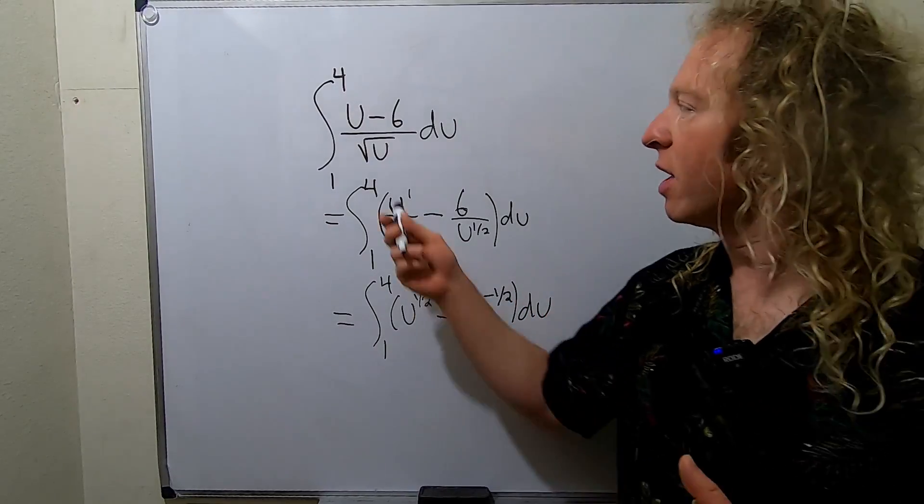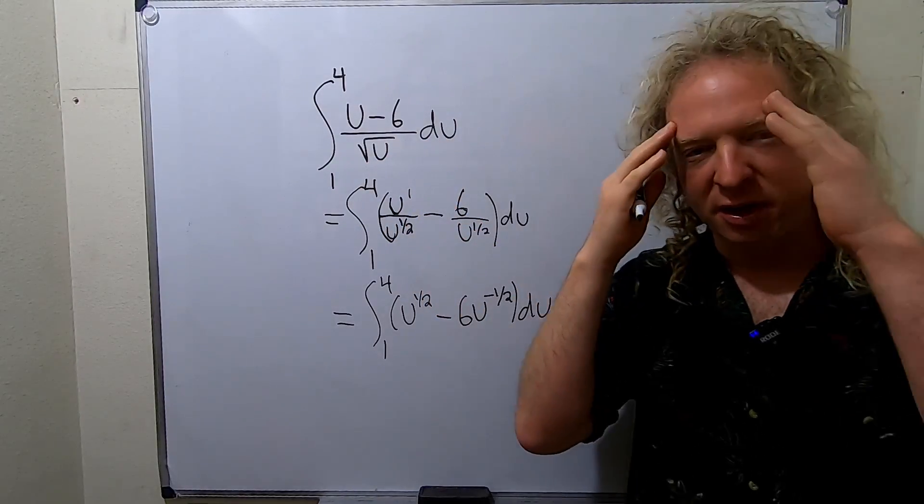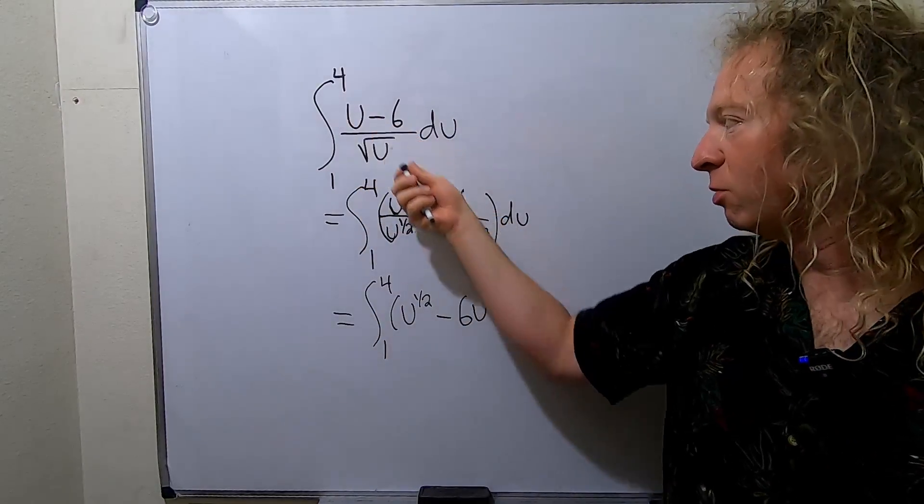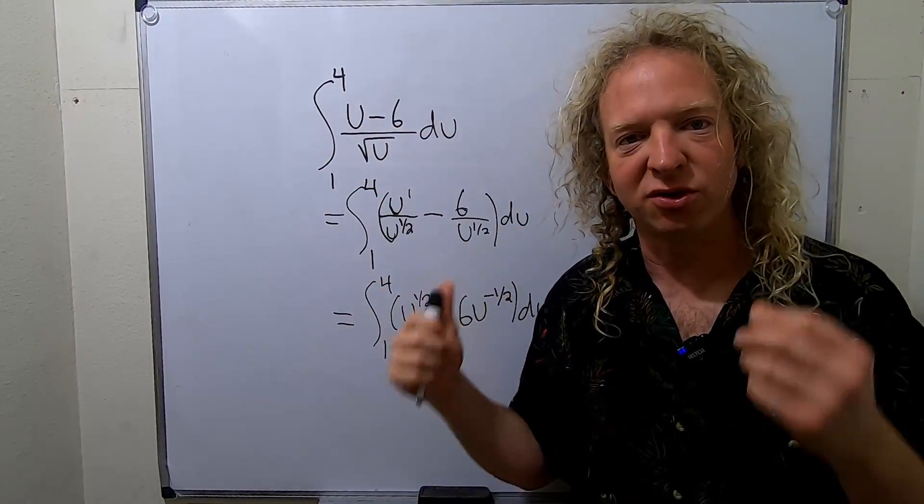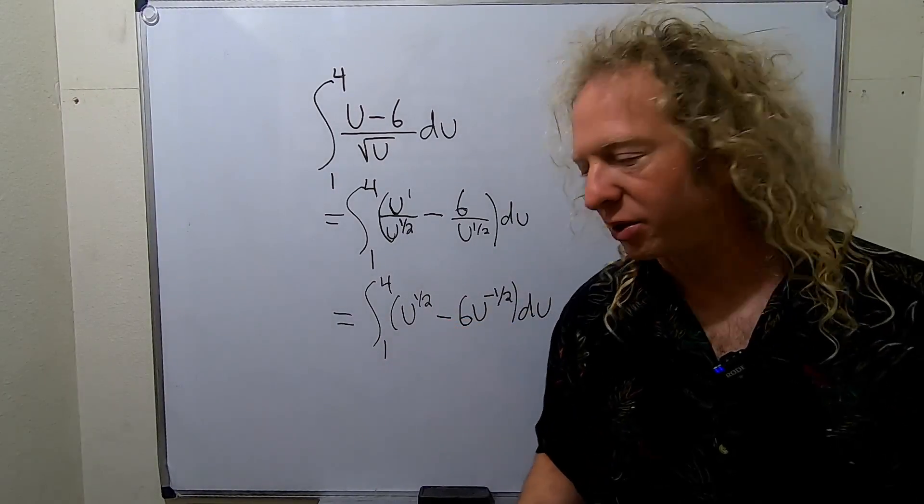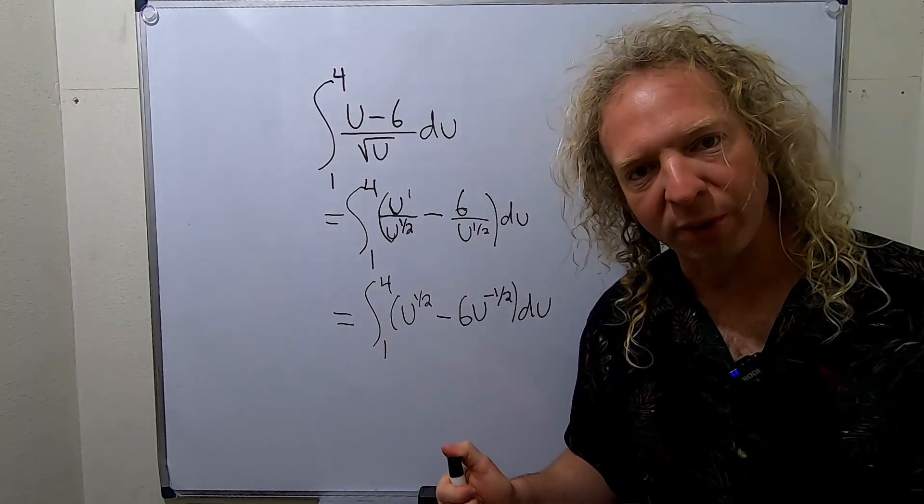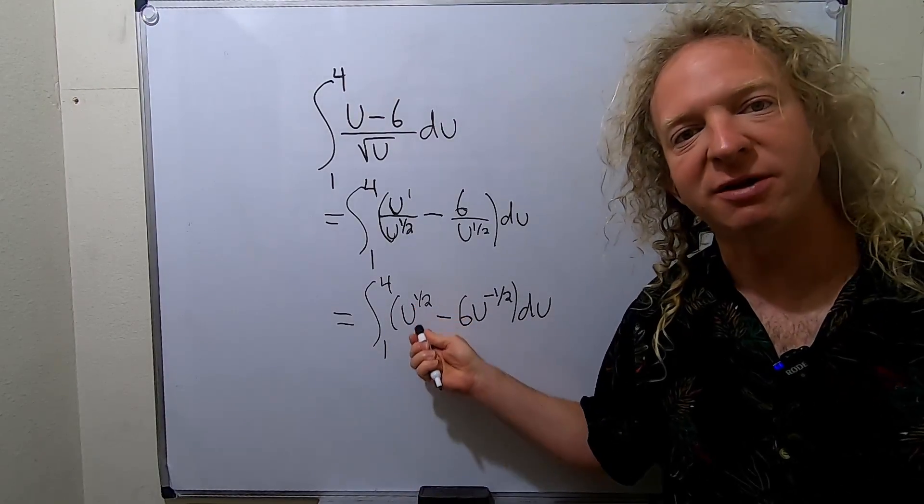Again, whenever you have two or three or more terms up top and a single term on the bottom, that should automatically come to mind. Can you break it up using this strategy? It's super useful. Now we're just going to integrate. When you integrate both of these pieces, you just use the power rule. You add 1 to the exponent and divide by the result.